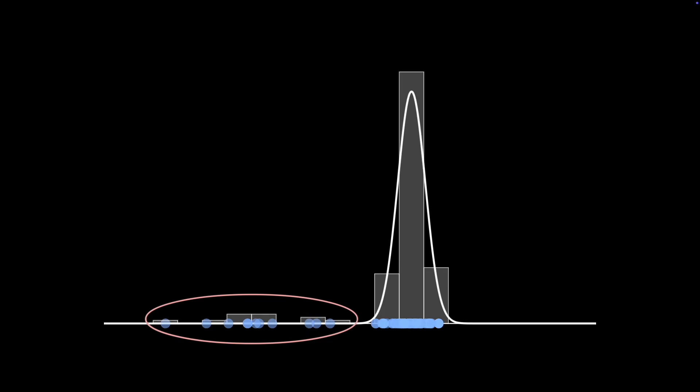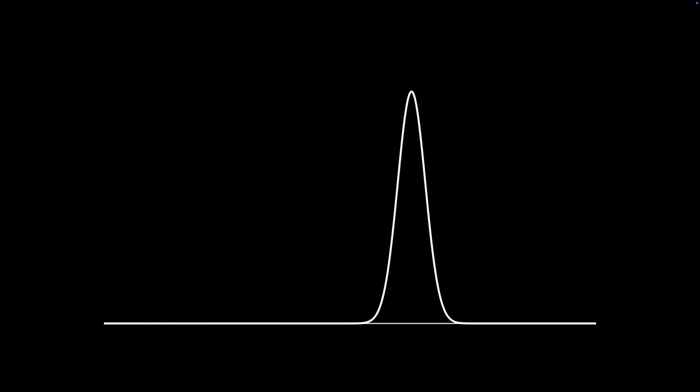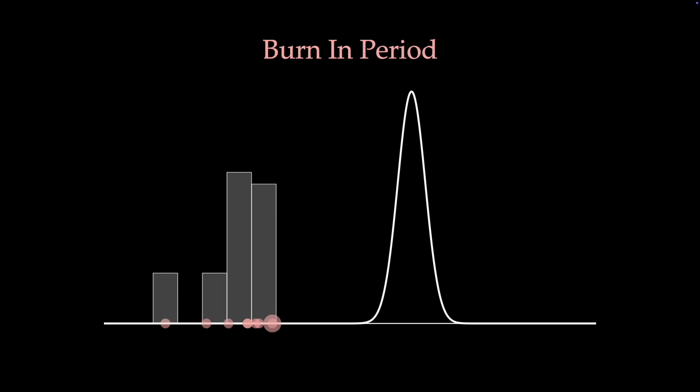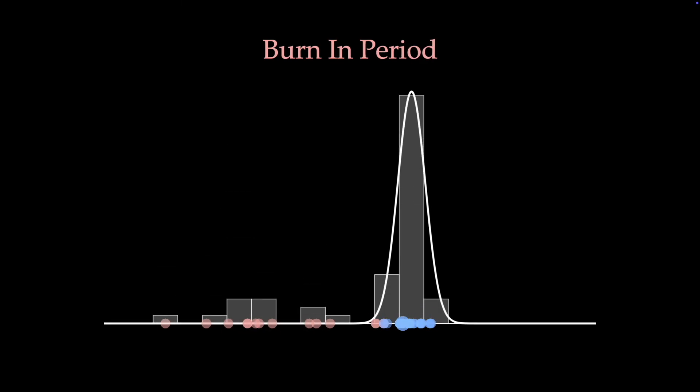If we were to continue to collect more samples, the influence of these initial samples will decrease, and in the limit of infinite samples, they'll have no impact at all. But when we have a finite sample size, sometimes it's easier to just throw out the first few samples to avoid this problem. For this reason, in practice, MCMC algorithms often use what's called a burn-in period, in which the first few samples just don't count.